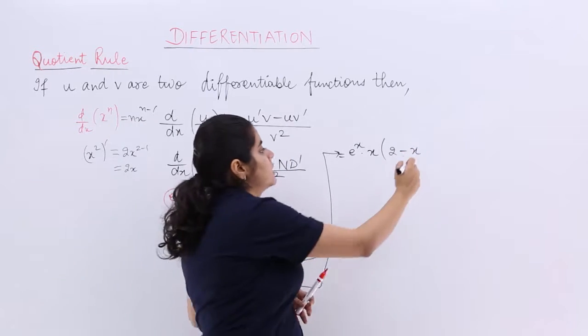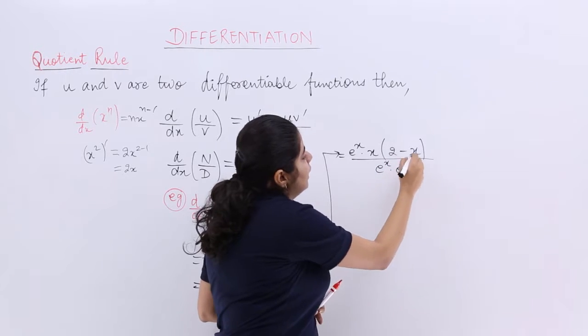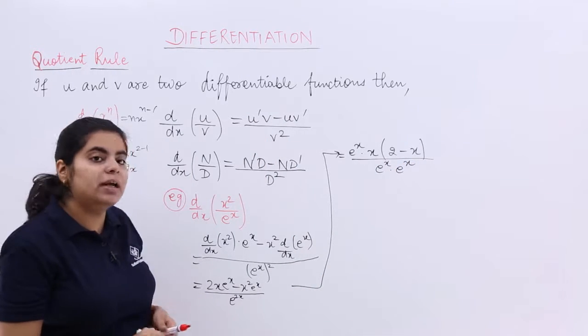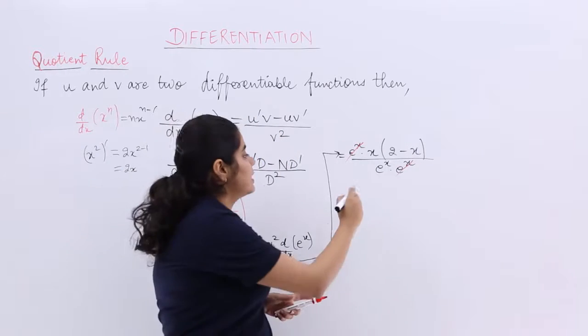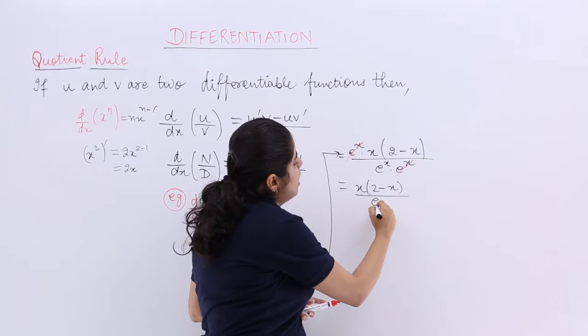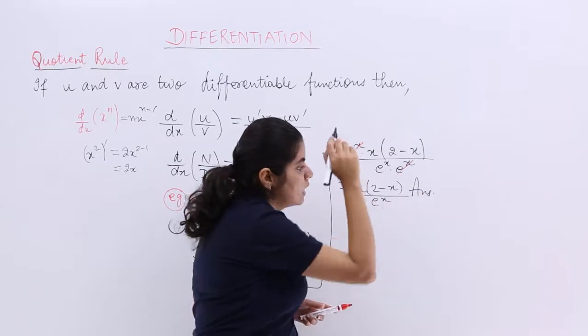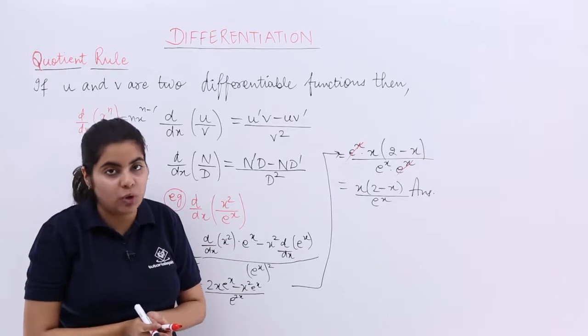That's it, 2 minus x. And in the denominator you have e raised to the power x whole square, that means e raised to the power x multiplied by e raised to the power x. e raised to the power x with e raised to the power x gets cancelled. So the answer is x(2 minus x) upon e raised to the power x. So this is one numerical problem suggesting the usage of product rule.